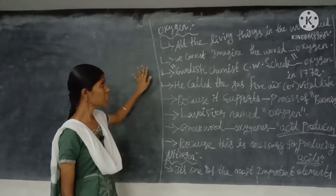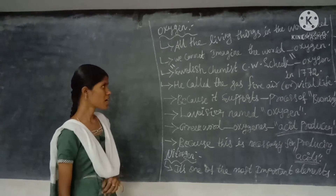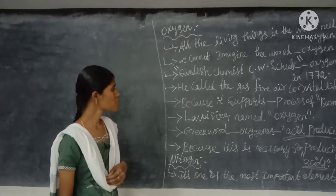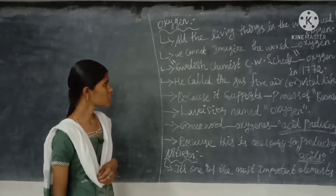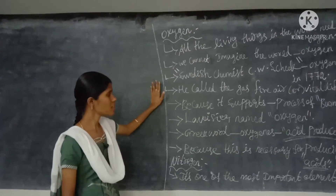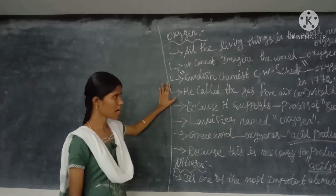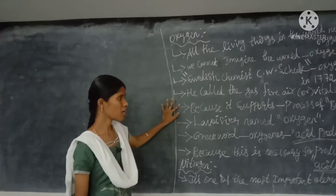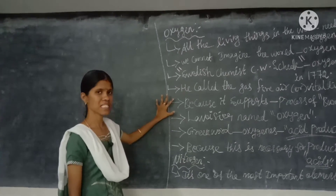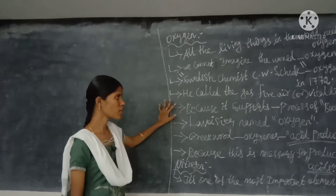All living things in the world need oxygen — including us, plants, and animals. We cannot imagine the world without oxygen. The chemist C.W. Scheele discovered oxygen in 1772. He called the gas 'fire air' or 'vital life' because it supports the process of burning.